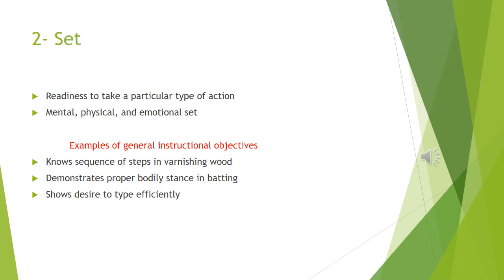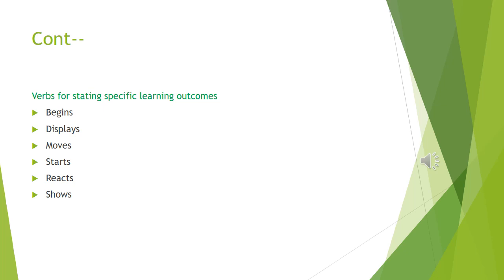Set refers to readiness to take a particular type of action. This includes mental, physical, and emotional set or readiness. Examples of general instructional objectives at this level include: knows sequence of steps in varnishing wood, demonstrates proper bodily stance in batting, and shows desire to type efficiently. Verbs like begins, displays, moves, starts, reacts, and shows can be used for stating specific learning outcomes.